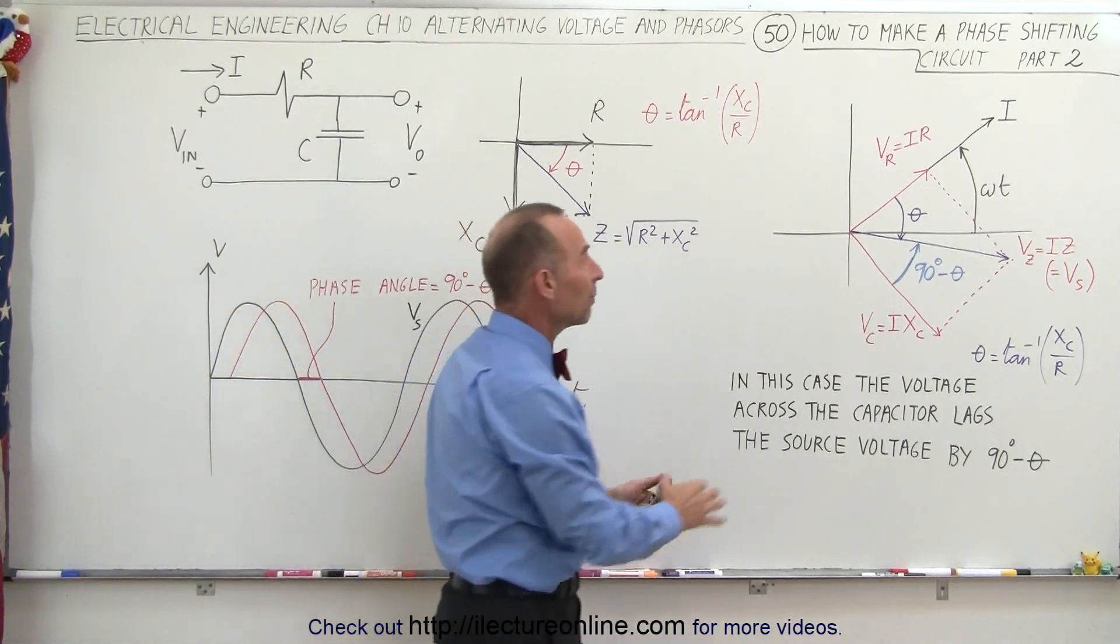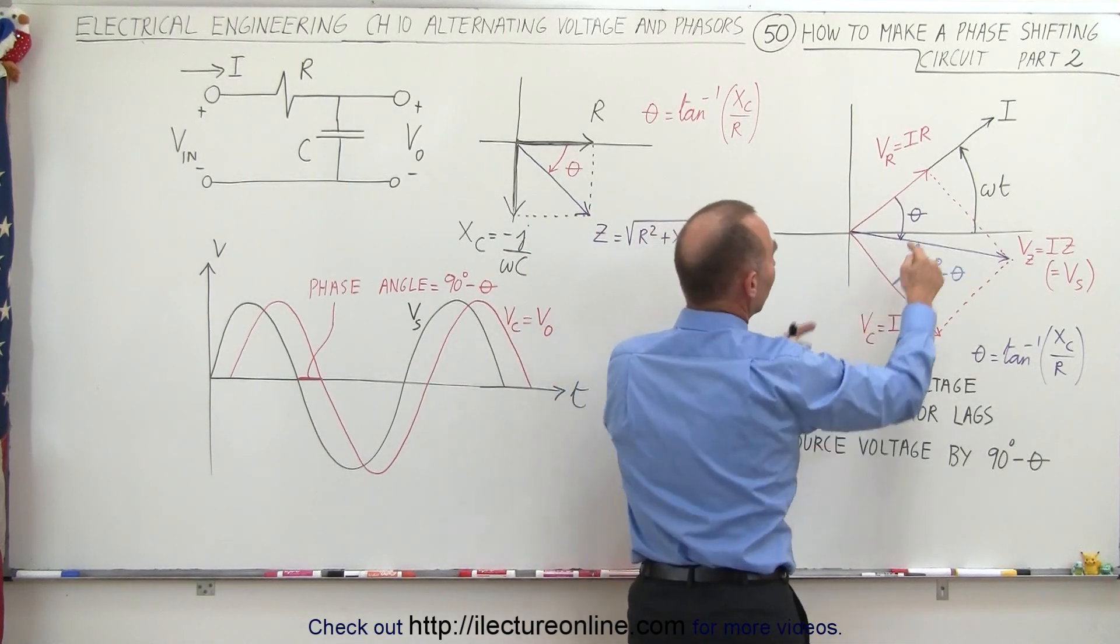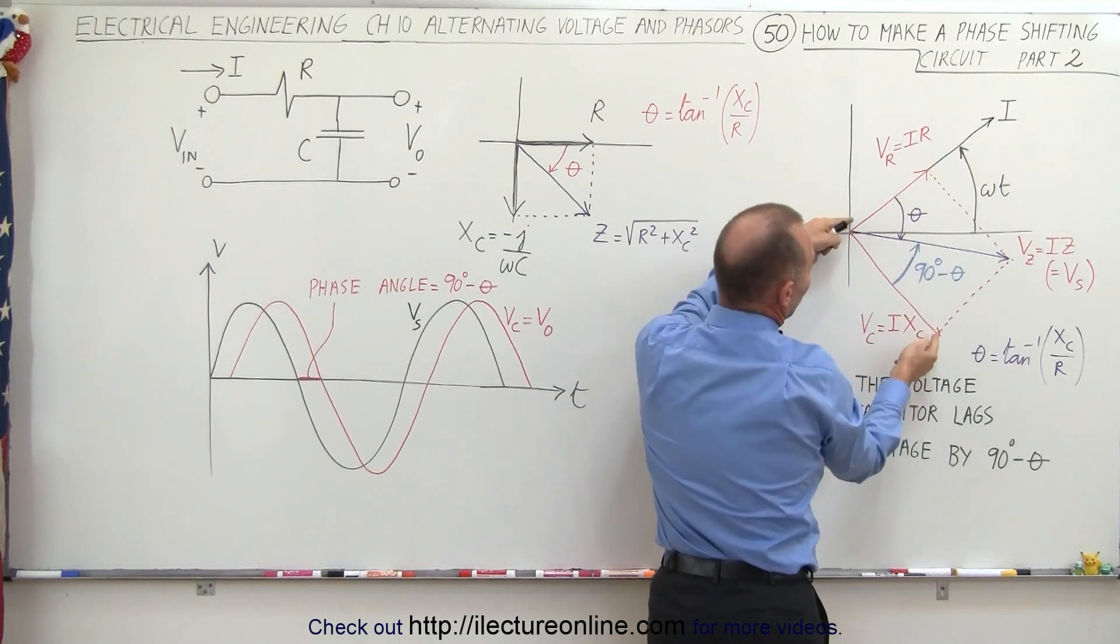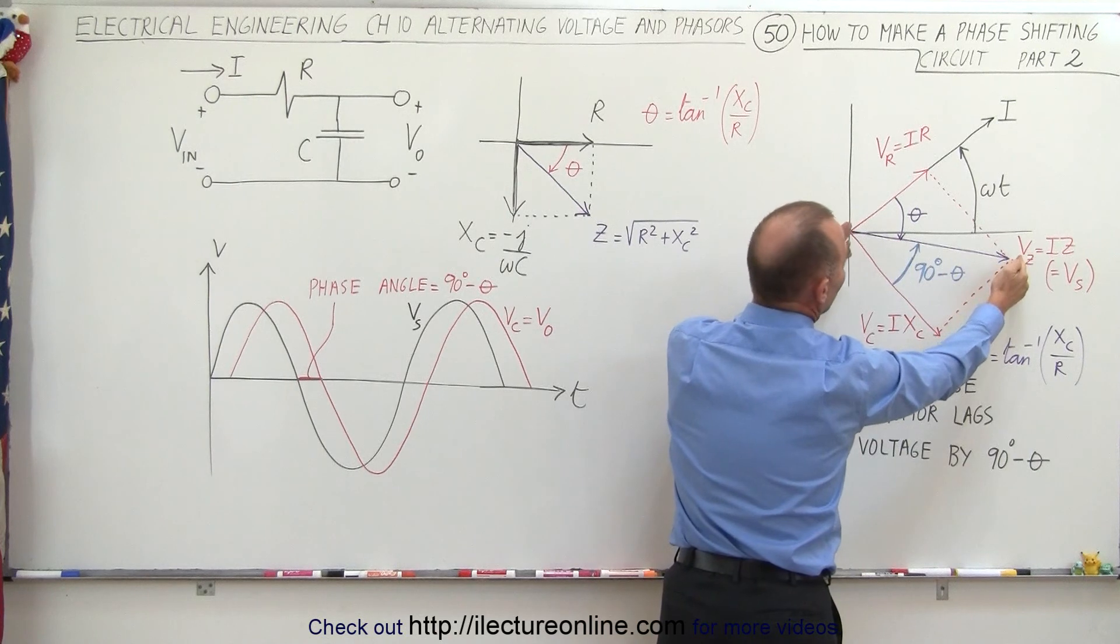And the phasor diagram we have here really hasn't changed, except this time we have to realize that here's the voltage across the resistor, which leads the voltage across the capacitor by 90 degrees. Then here's the voltage across the source.